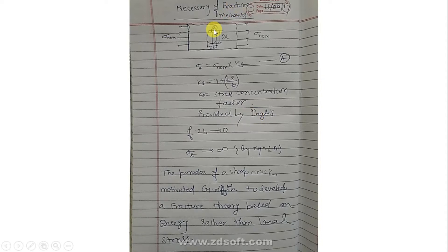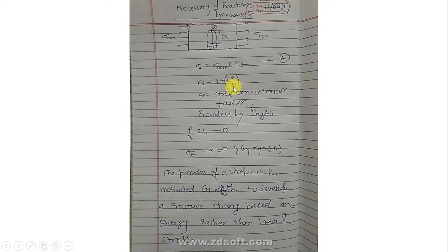If we reduce 2b — if 2b tends to zero — then according to this equation Sigma_A would become infinite. If b tends to zero, then 1 divided by 0 makes kt become infinite, and if infinity is multiplied by anything, the product also becomes infinite according to mathematics.